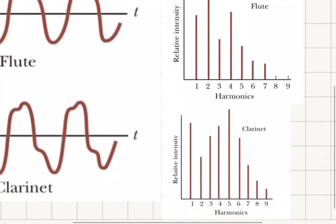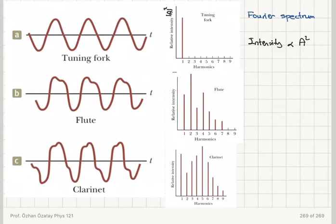And I see that I only have one component, which is the fundamental frequency. If I concentrate on the flute, on the other hand, I see contributions from different harmonics—it has harmonics up till seven. In the clarinet, I have contribution even from the ninth harmonic. So therefore...